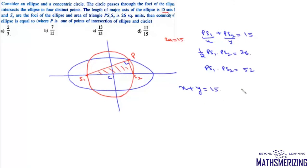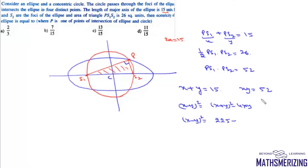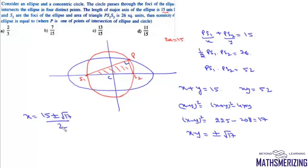Setting PS1 = x and PS2 = y: x + y = 15 and xy = 52. Then (x - y)² = (x + y)² - 4xy = 225 - 208 = 17, so x - y = ±√17. Solving: x = (15 ± √17)/2 and y = (15 ∓ √17)/2.